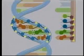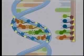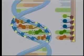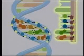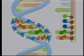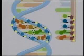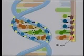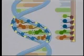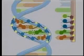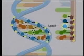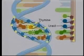RNA is different from DNA in three important ways. First, RNA is a single strand. Second, RNA has a different type of sugar called ribose in its nucleotides. Third, RNA contains the base uracil instead of thymine.